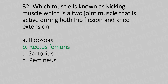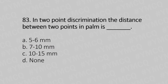Question 83: In two-point discrimination, the distance between two points in the palm is — option A: 5 to 6 mm; option B: 7 to 10 mm; option C: 10 to 15 mm; option D: none. The answer is option B: 7 to 10 mm.